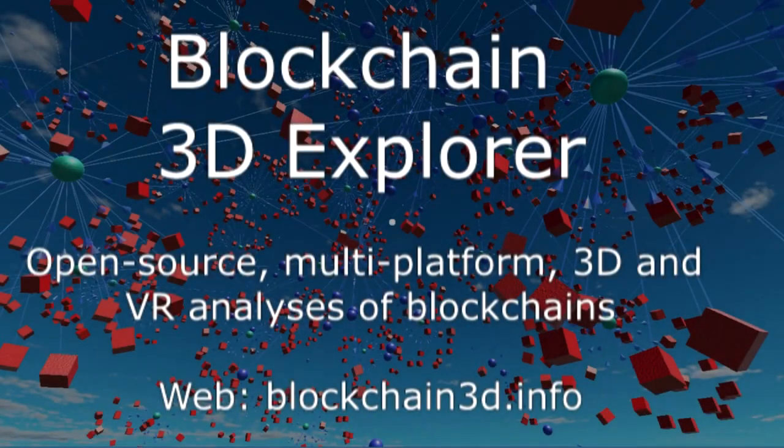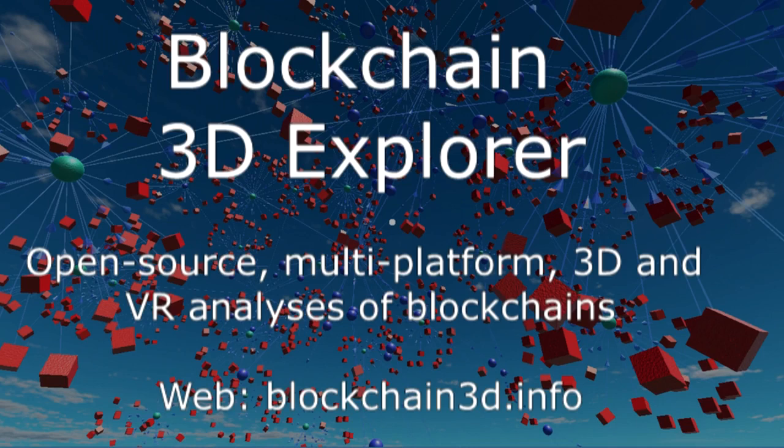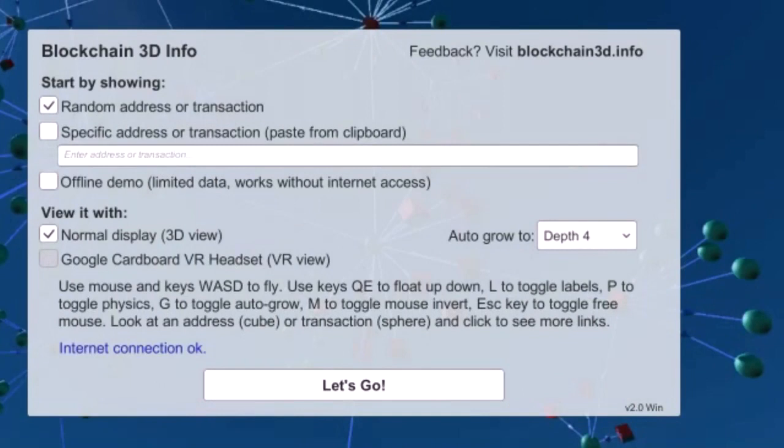Hi and welcome to the Blockchain 3D application. We're going to take a look at the Bitcoin pizza transaction, which was the transaction from May 2010 that's the first documented transaction for goods or services using Bitcoin. If we choose on this first screen of the application to display a random address or transaction, it defaults to showing us the Bitcoin pizza transaction.